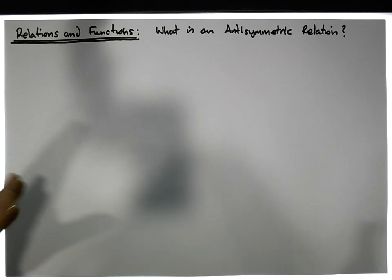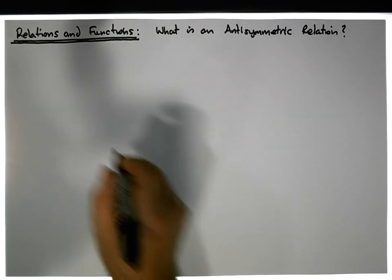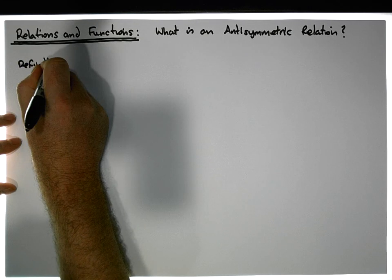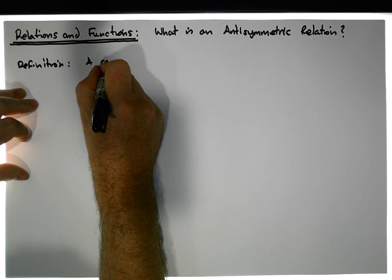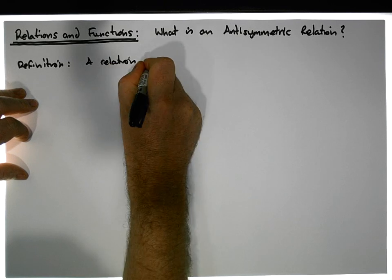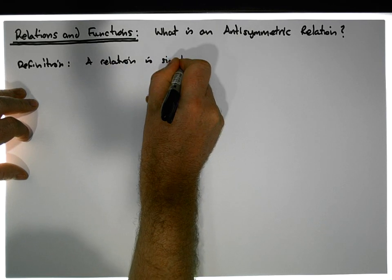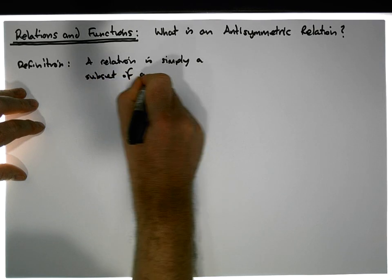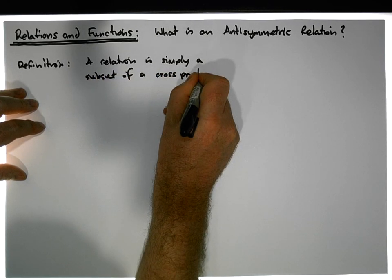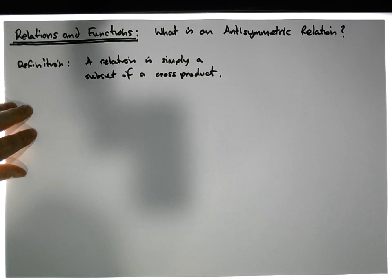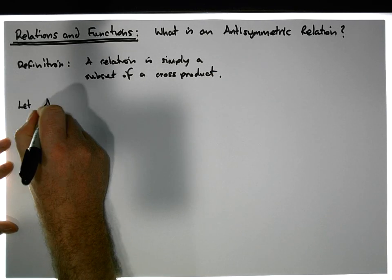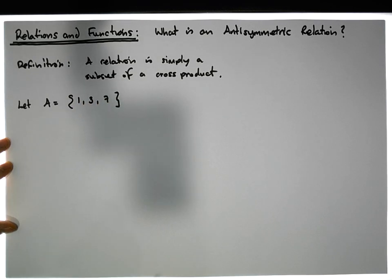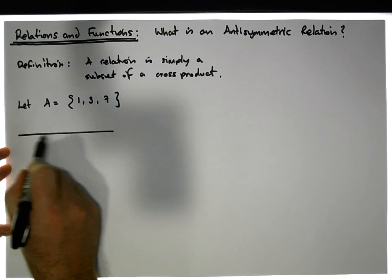The way I've started these videos is by first defining what a relation is, so let's give that definition again. A relation is simply a subset of a cross product — that's all there is to it. For example, if we let the set A equal the values 1, 3, and 7.